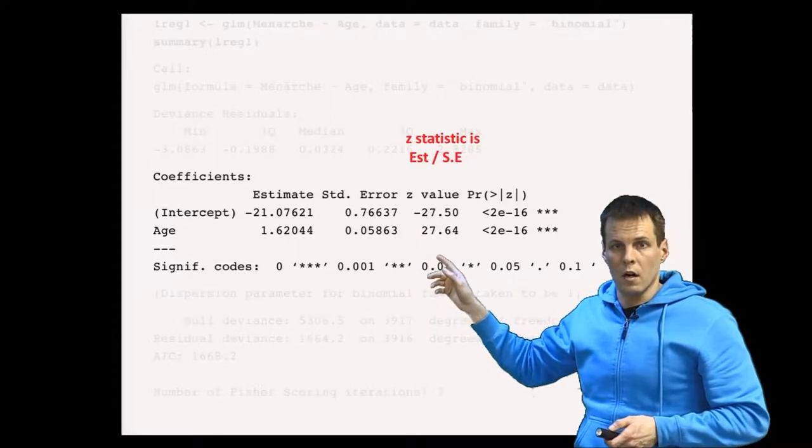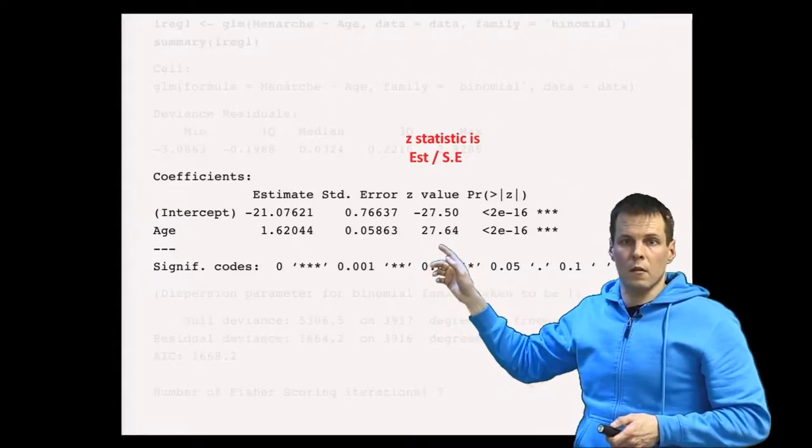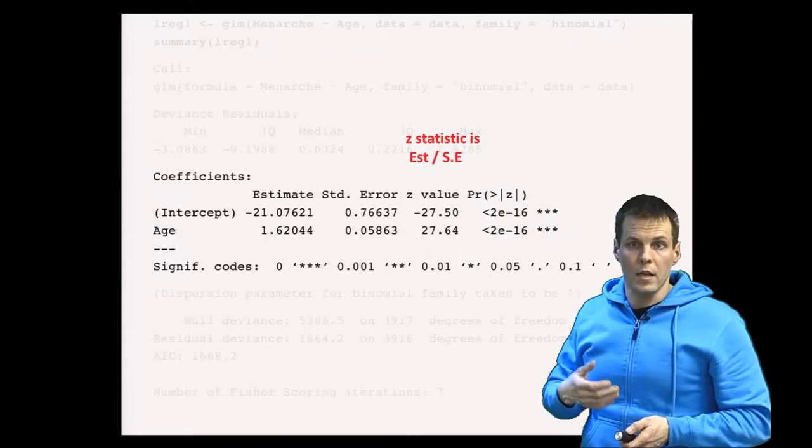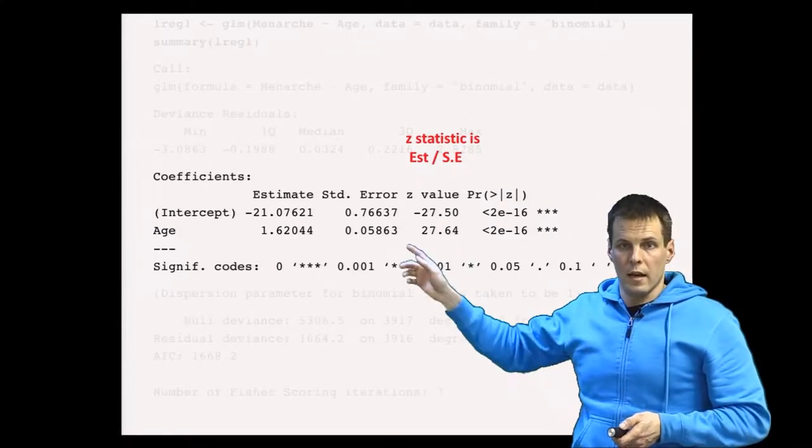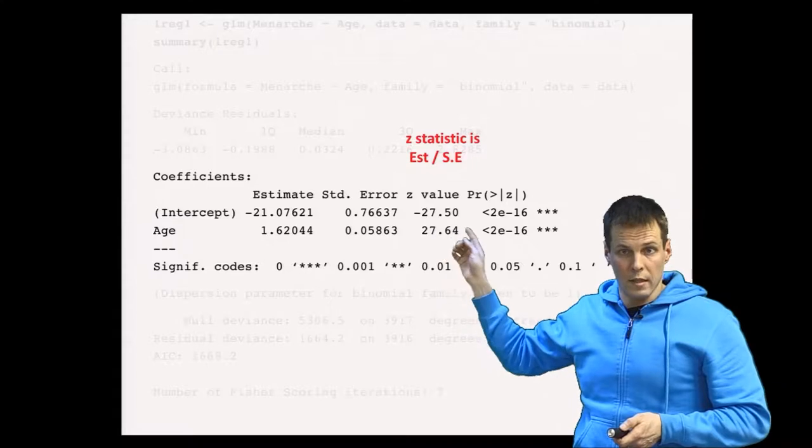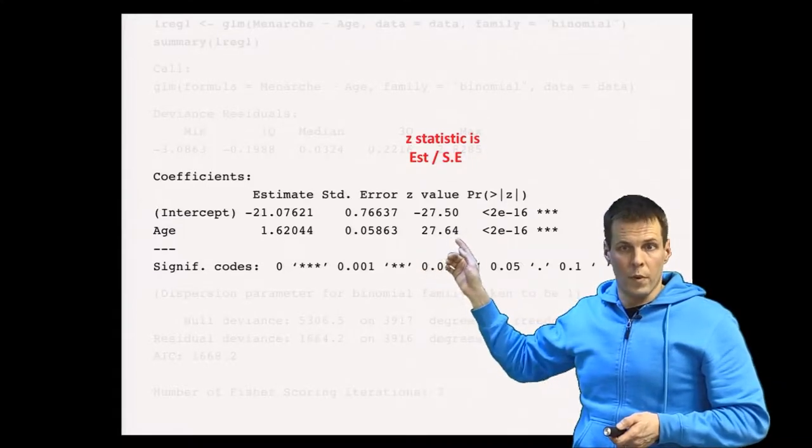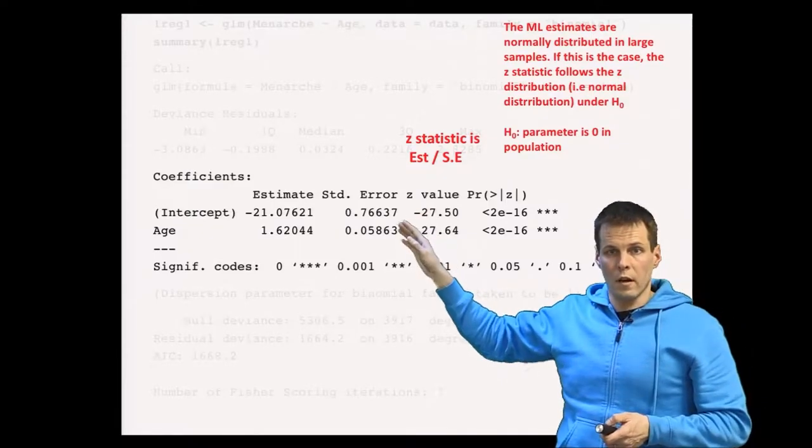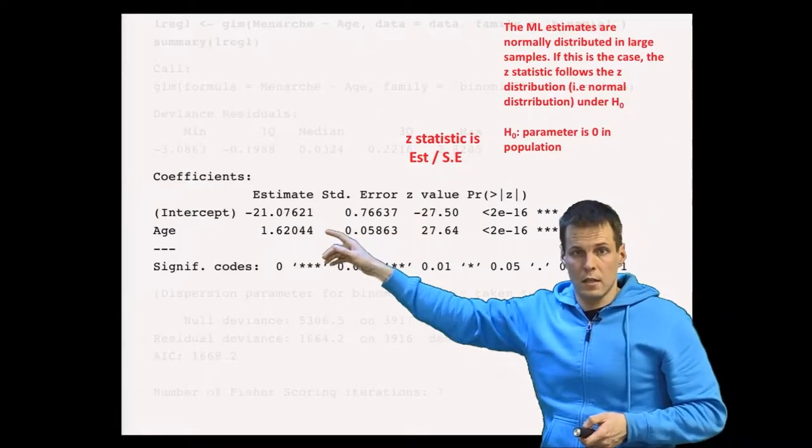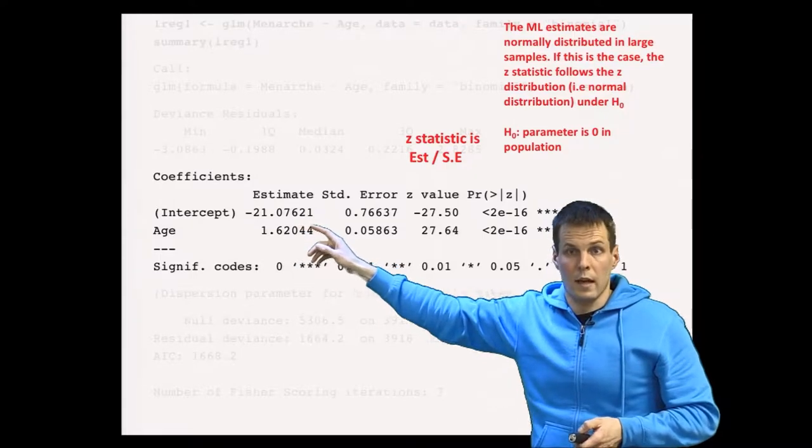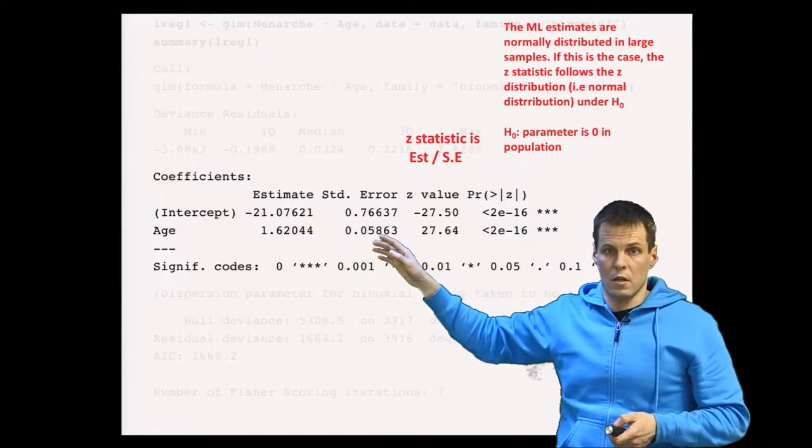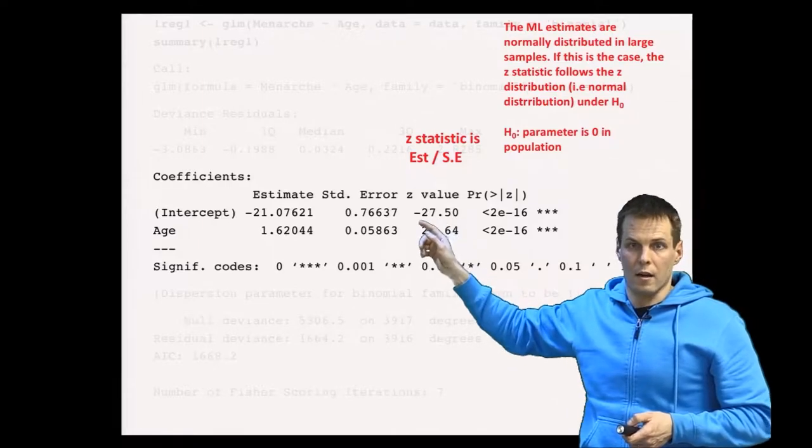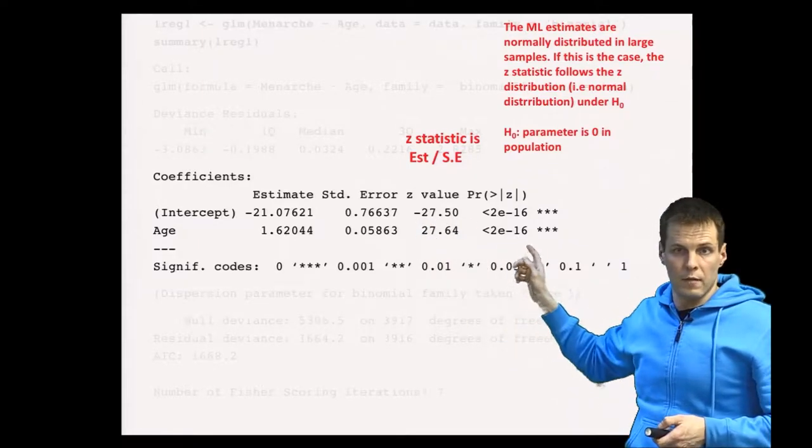It is called a z-statistic instead of t-statistic because the maximum likelihood estimates are based on large sample theory, and instead of comparing against the t-distribution, we compare this against the normal distribution. So under the null hypothesis that this estimate is zero in the population, and if the sample size is large enough, the z-value follows standard normal distribution, and that allows us to calculate the p-values.